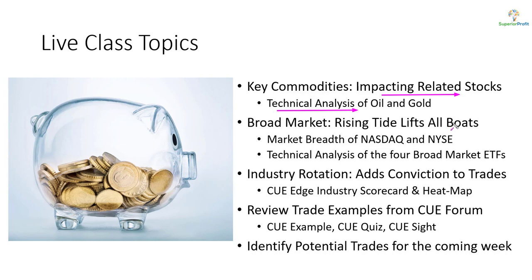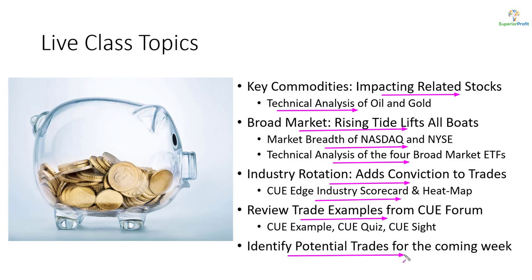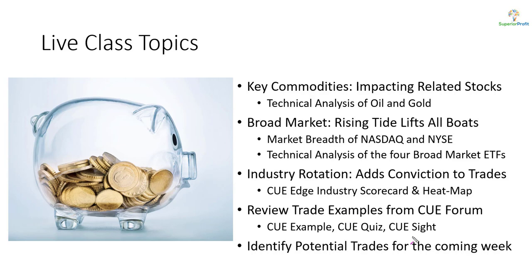In today's topics, we look at oil and gold using technical analysis — they tend to impact related stocks. When swing trading stocks, we like to take them in the direction of the market. We'll study market direction using NASDAQ and NYSE market breadth and technical analysis of market ETFs. In addition to aligning trades with market direction, we like to align them with industry strength as well. We'll study that using scorecard and heat map. Along the way we may review some recent trade ideas shared in our traders forum, and we'll try to look for potential trades for the coming week.